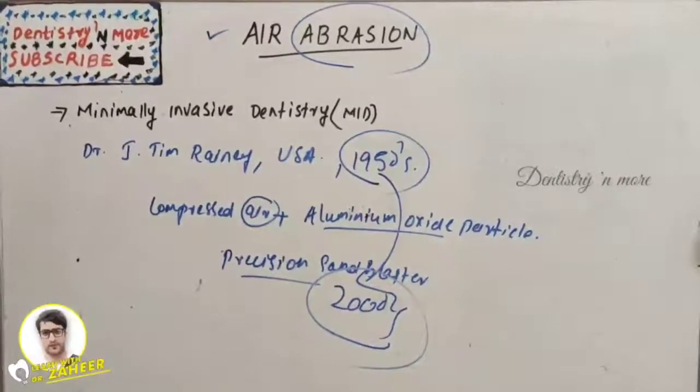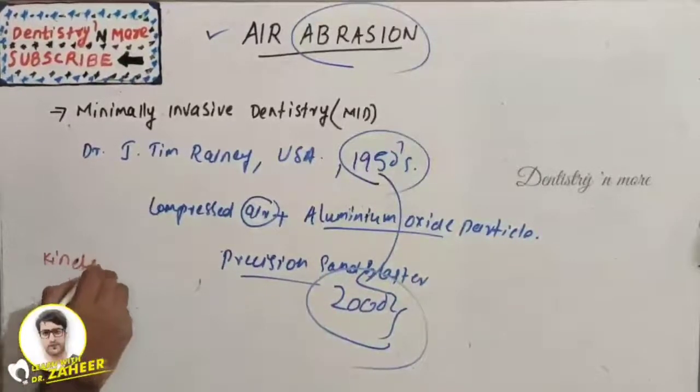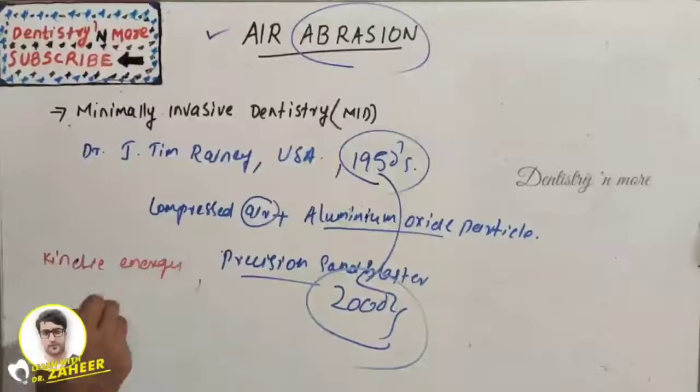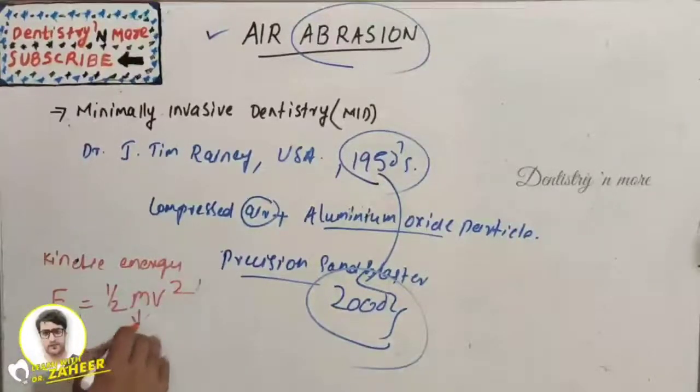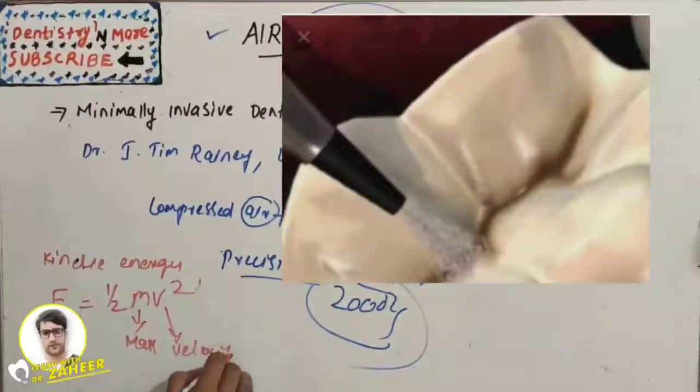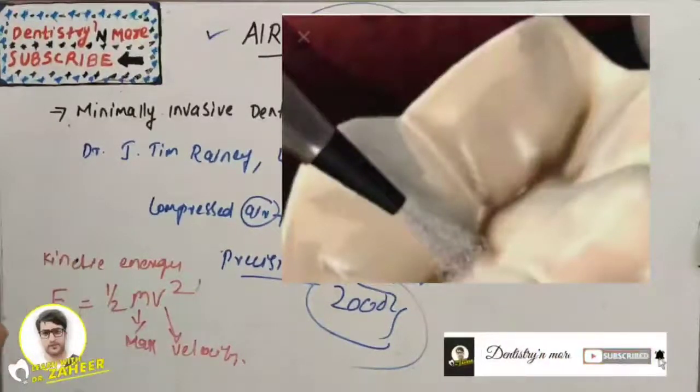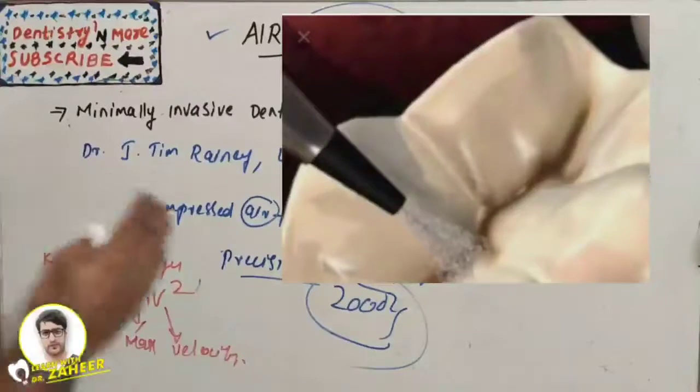The basic principle of air abrasion is based on a formula: kinetic energy. E = 1/2 mv², where m is the mass and v is the velocity. The cutting capability of air abrasive is attributable to the energy of mass in motion, unlike conventional mechanical methods that depend on friction.